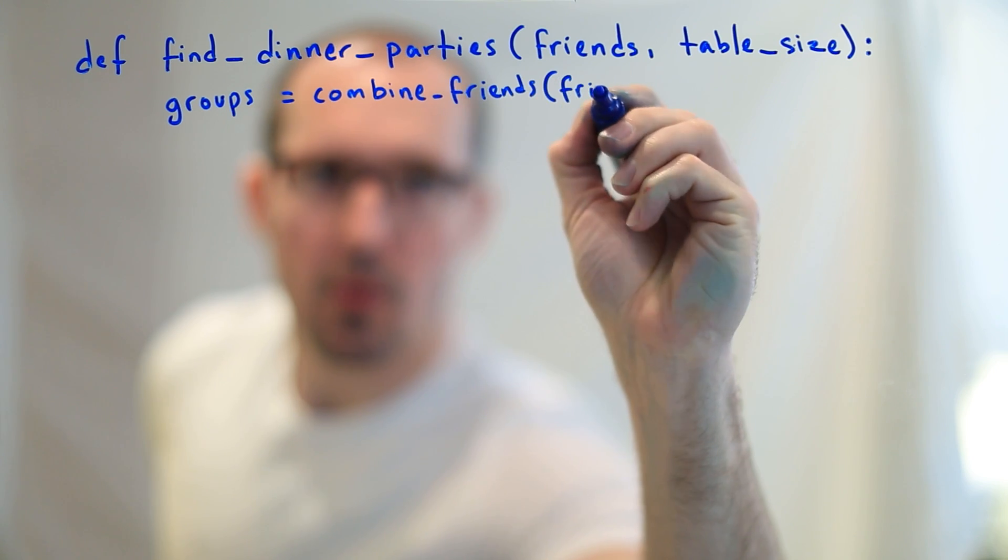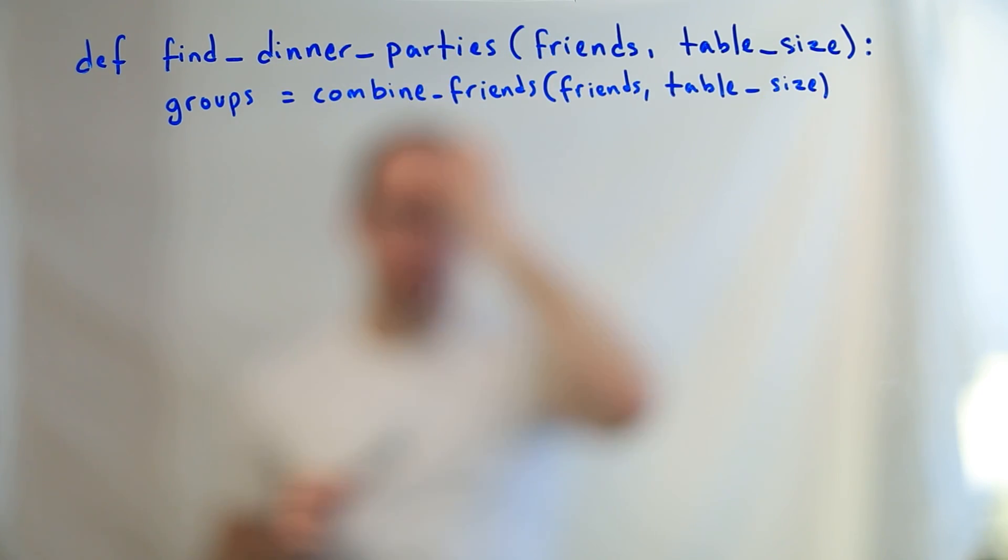So we're going to put a facade function up first that says, find dinner parties, take the right parameters that we need, and then internally we're going to have this function called combine friends that lets us do the dirty work that we need and not worry about whether or not it's a pretty API for the consumer. We're also going to store the return of that function in this variable groups so that we can presumably do something with it. Maybe we'll rank our friends or we'll decide who likes each other best and what the optimal dinner party is. Maybe that's a question for another video. For now, let's just print it. That's a pretty straightforward thing to do.